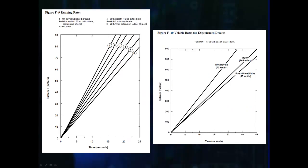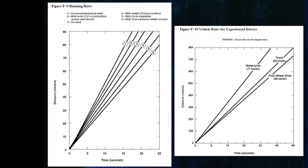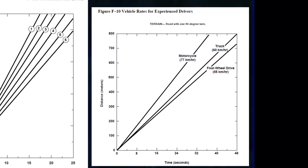Here we have two graphs that show standardized rates that can be used to systematically and consistently assign how long it takes for an adversary to traverse an area — for example, running 200 meters from a fence to a door. The graph on the left shows different running rates; the multiple lines represent running speeds under varying conditions. Logically, the adversary will run slower when carrying more equipment or on terrain that is not solid, such as sand or gravel versus pavement. The graph on the right represents movement speeds for various vehicles and will be based on the type of terrain being traversed, in this case a road with a 90 degree turn.